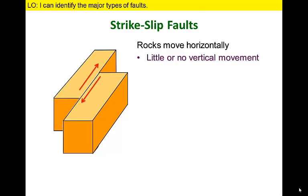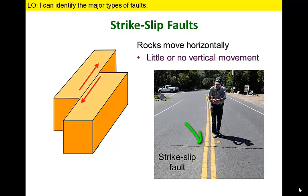Geologists identify strike-slip faults when rocks move horizontally with little vertical displacement. For example, yellow lines have been offset by a fault that cuts across a road in California. Strike-slip faults are associated mostly with transform plate boundaries. Just as we can classify dip-slip faults as normal or reverse, we can classify strike-slip faults as right or left lateral.